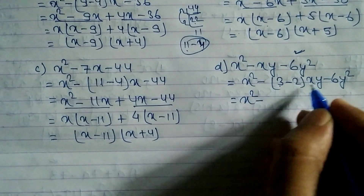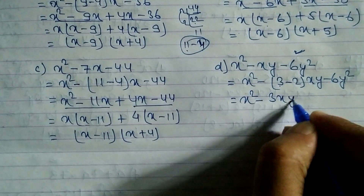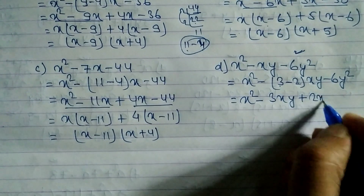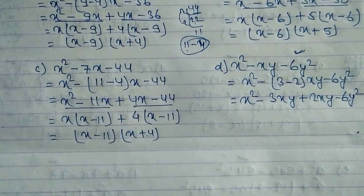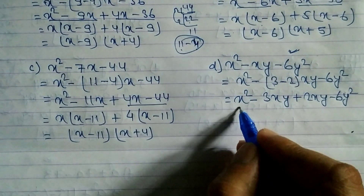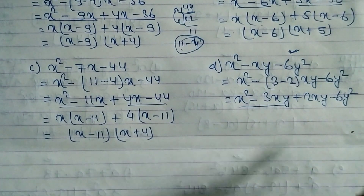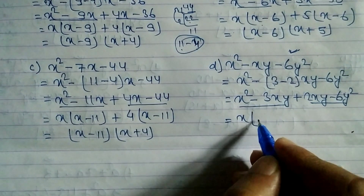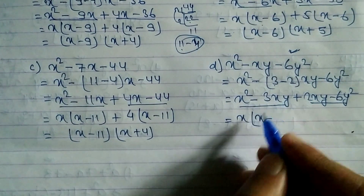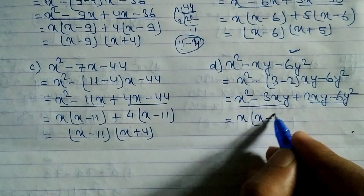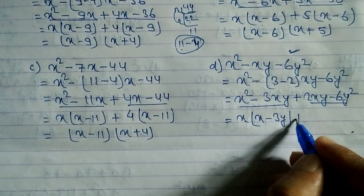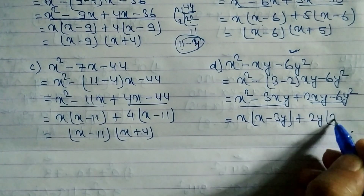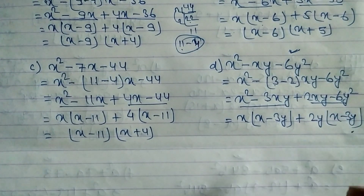Opening the bracket: x² - 3xy + 2xy - 6y². From the first two terms, x is common: x(x - 3y). From the last two terms, 2y is common: 2y(x - 3y).